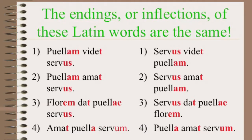Now let's look at sentence number three, which has two new vocabulary words: dat means gives, and florem means flower. Notice that the inflection on servus is still -us, which means it is functioning as the subject. But the inflection of girl, puella, has changed to -ae instead of -am. This means that the girl is no longer receiving the action, but instead something is being given to the girl. Flower, florem, because it ends with -em, and I know that -em is a direct object inflection, serves as the direct object. So both sentences in number three say the servant gives the girl a flower, or the servant gives a flower to the girl.